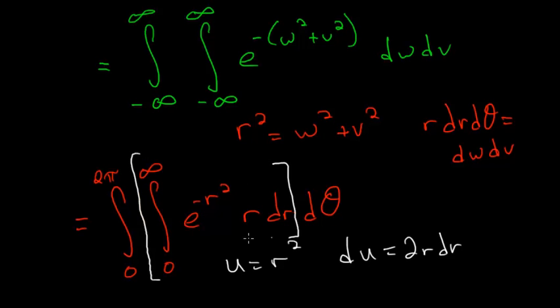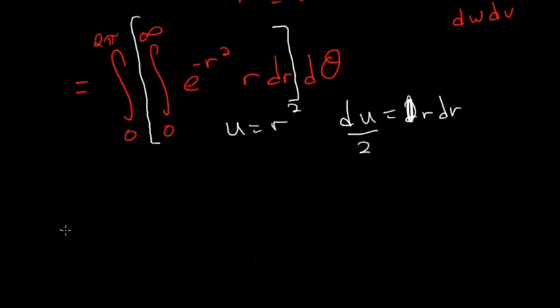And since we have r dr here, we'll need to divide each side of this equation here by 2. So we'll just essentially just put the 2 on the other side.